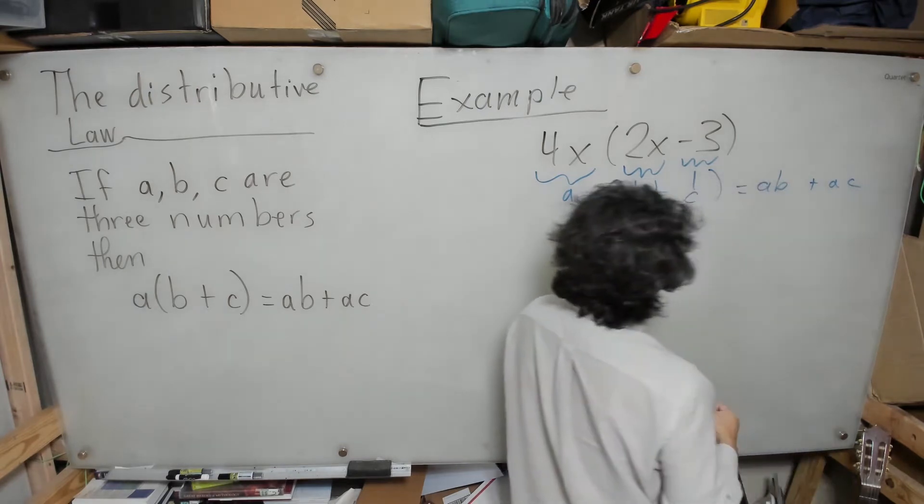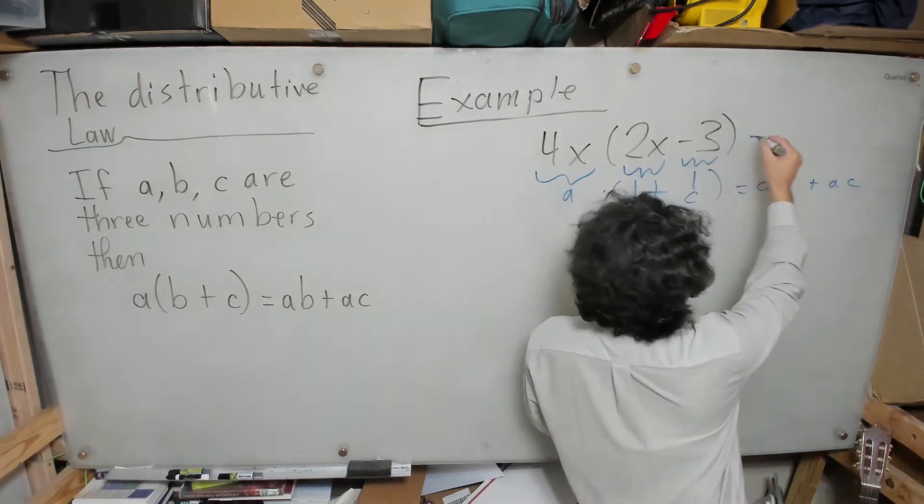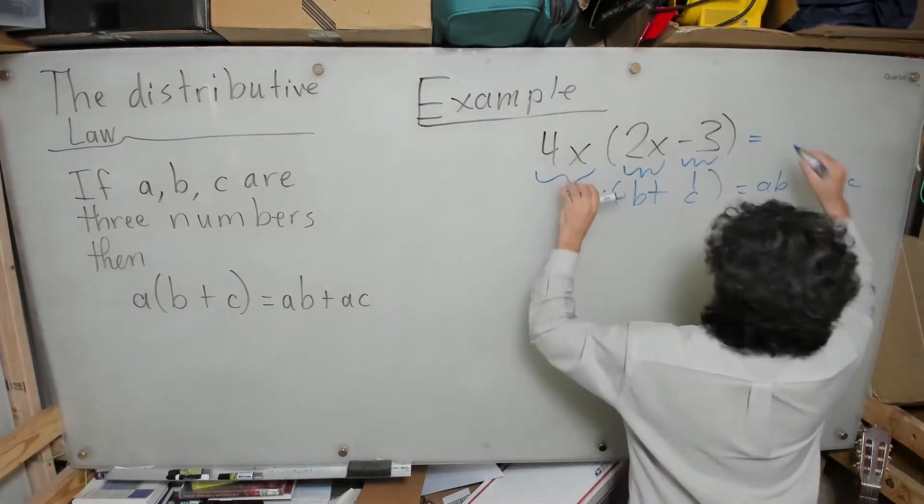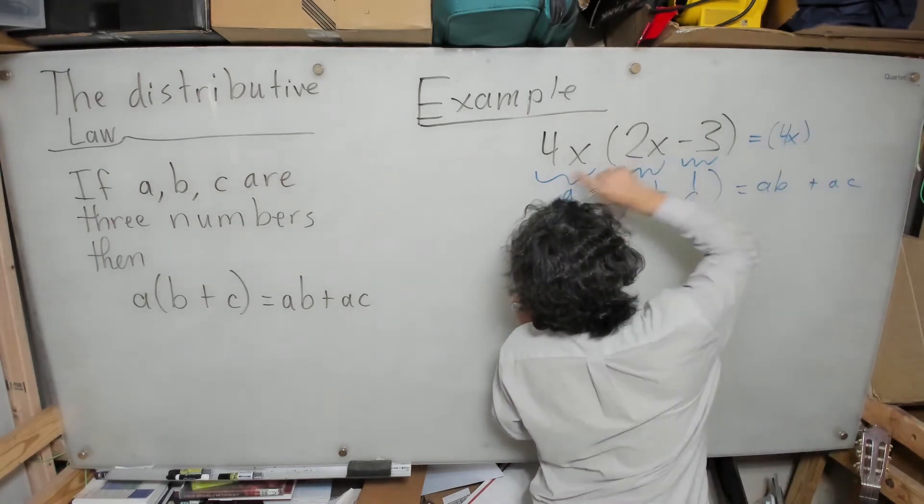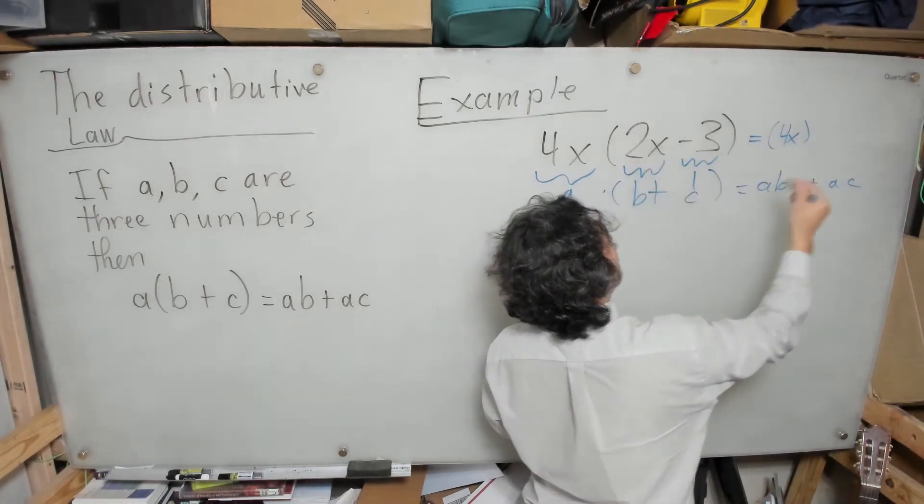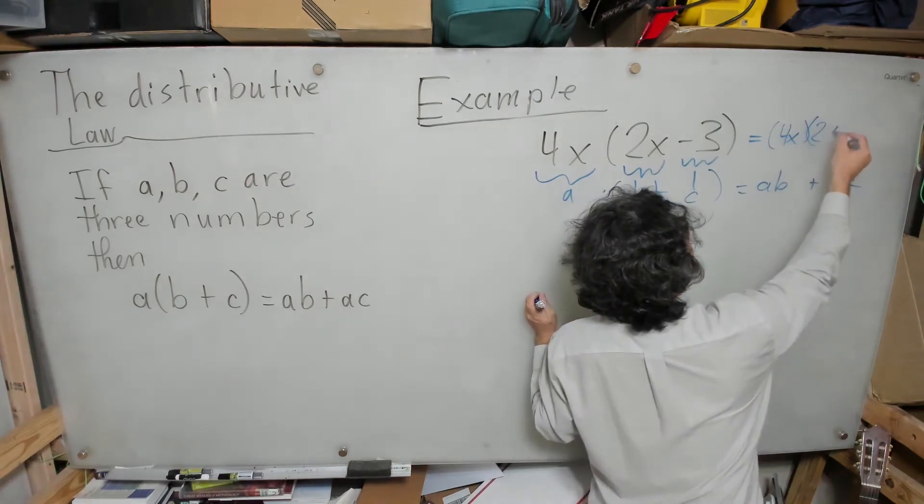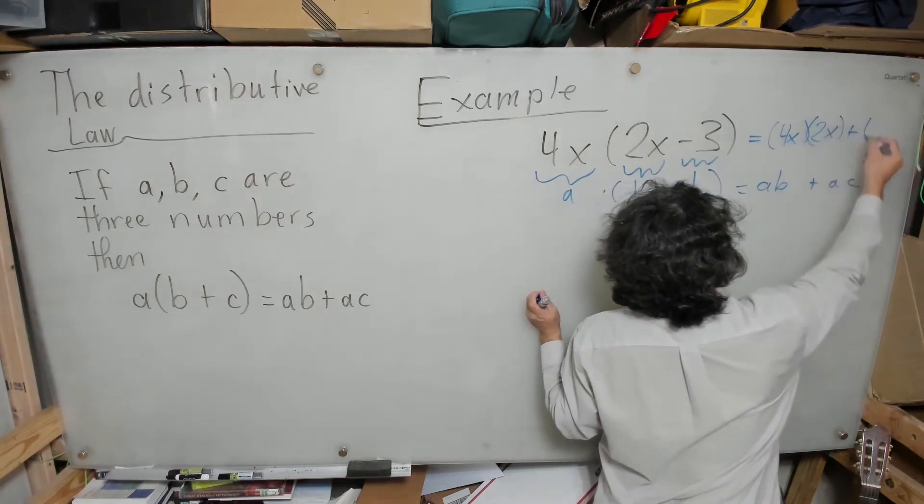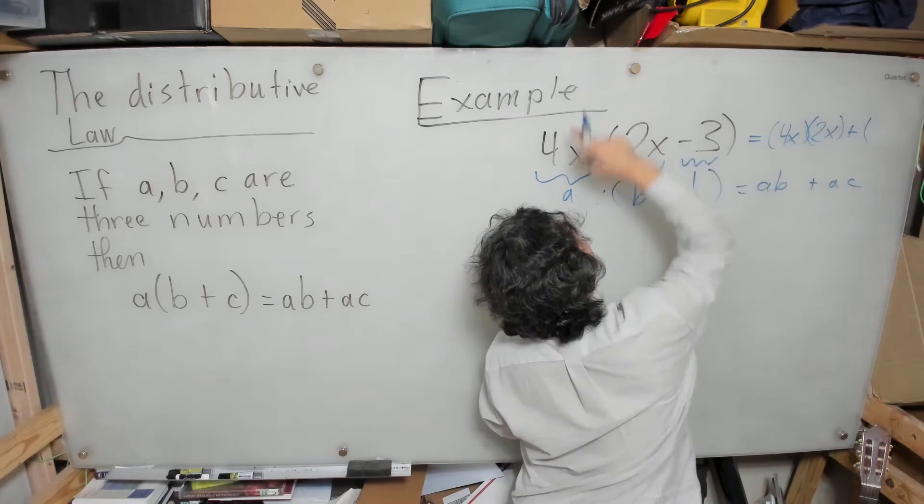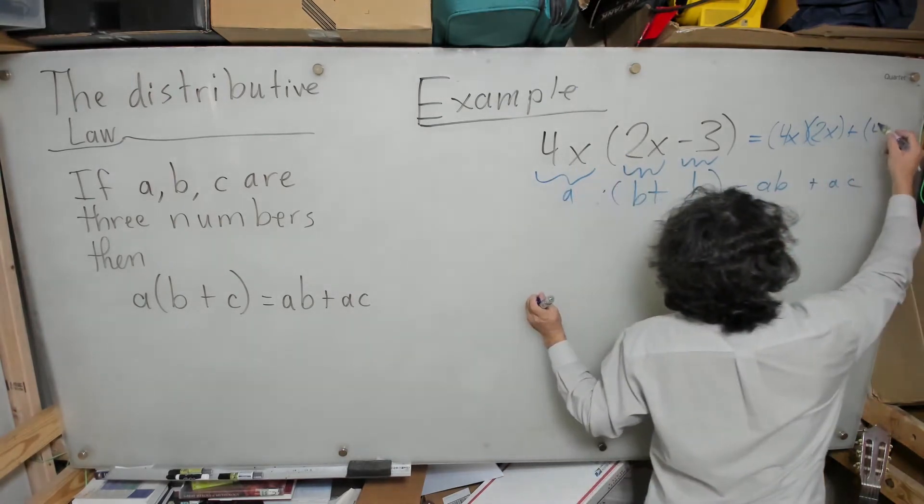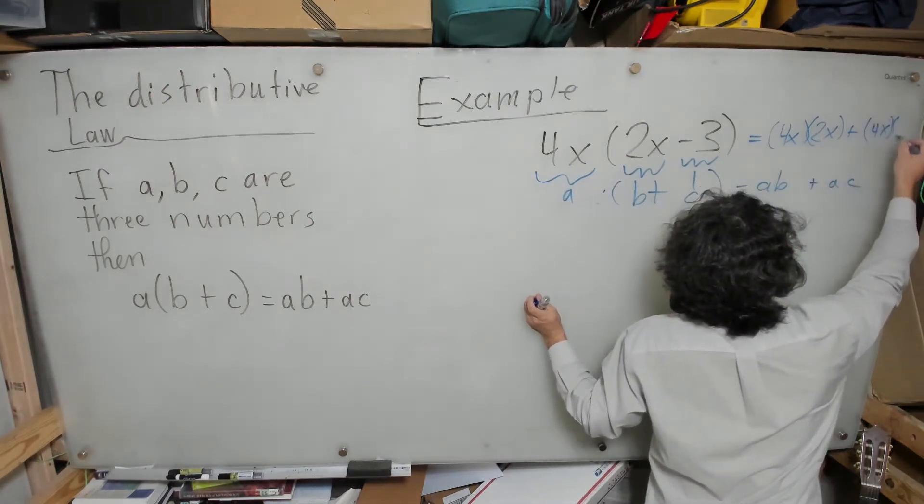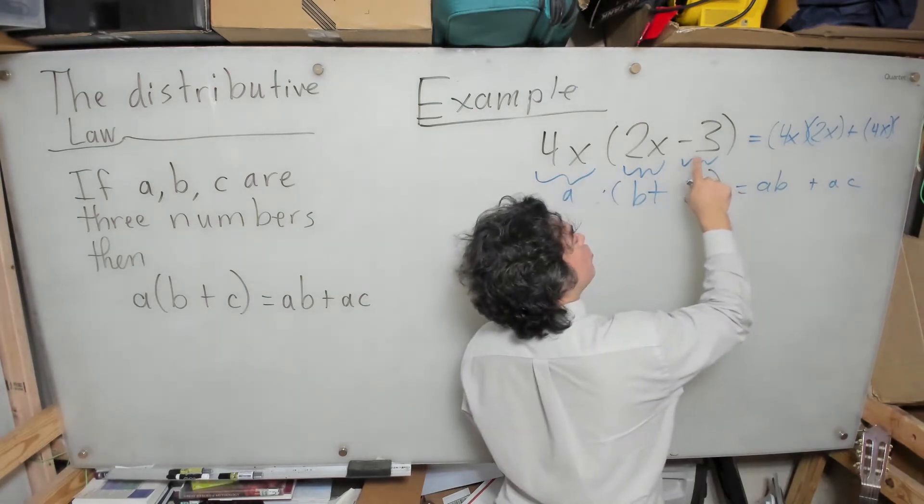So that's going to equal 4x times the b, which is 2x, plus the a, which is 4x, times the c, which is negative 3.